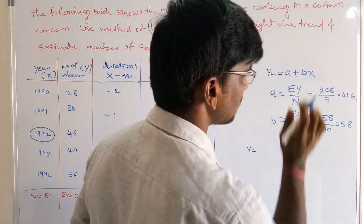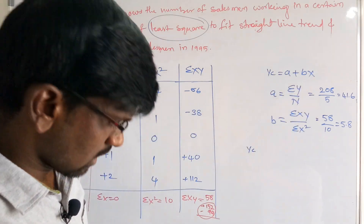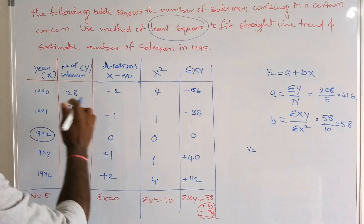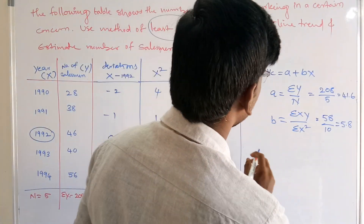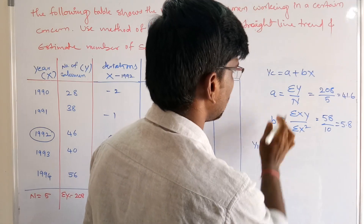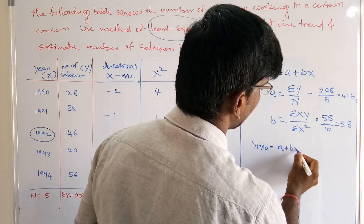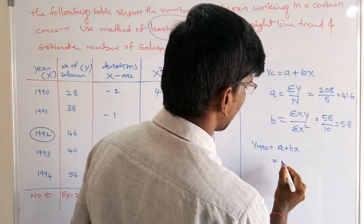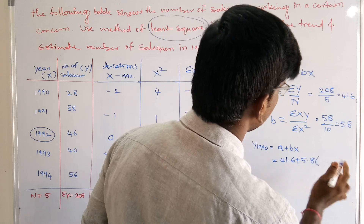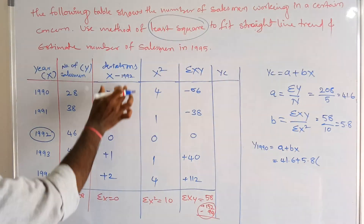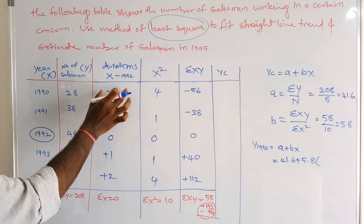Using yc = a + bx, we find the trend values for each year. The x values here are the deviations we calculated earlier. For each respective year from 1990 to 1994, we substitute the corresponding x deviation value into the formula.